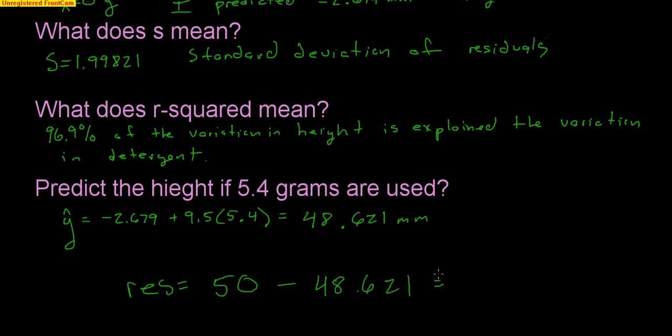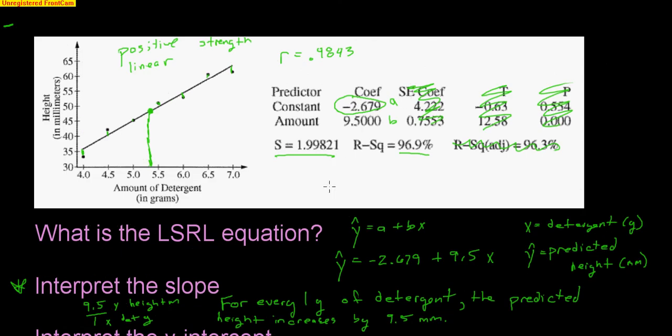And 50 minus that value is 1.379. And again, that is the residual measured in millimeters. So that means that at a positive residual, so my actual value was a little bit higher than predicted when it came to 5.4 grams. So 50 was the actual that I knew from an actual experiment, whereas the 48.621 was a predicted value. And look, I was only off by 1.379, which makes sense because I'm typically off by 1.99821. That's the standard deviation of residuals, how much you're typically off by. So the fact that I'm off by less than that shows me that I am making pretty good predictions.